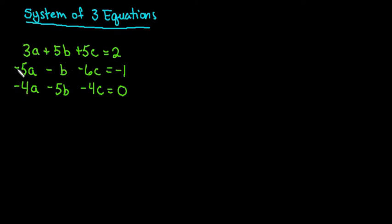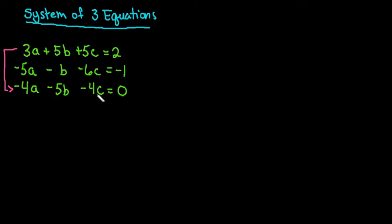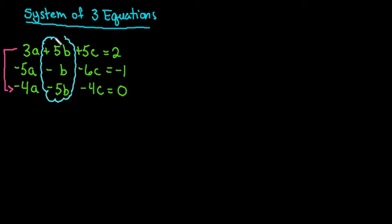If you look at a, none of them are opposites of each other. Looking at 3, negative 5, and negative 4, none of them can I add together and automatically cancel out a. I can't multiply 3 by anything to get either 4 or 5, so this would take a lot of work. Looking at b, I could automatically cancel the b's by adding equation one and equation three, or by multiplying the middle equation by 5 and adding it to equation one. Looking at c, none cancel automatically and I'd have to multiply all equations multiple times. So I'm going to choose to eliminate b.